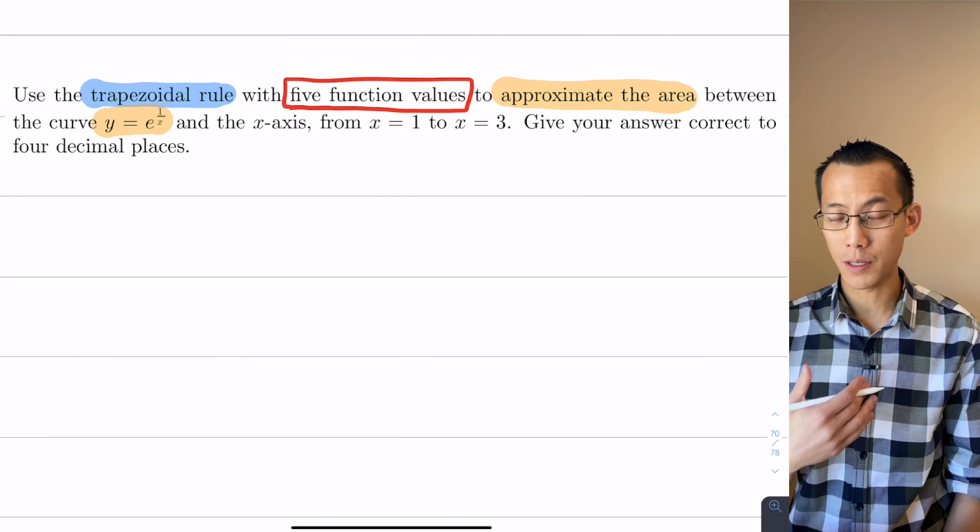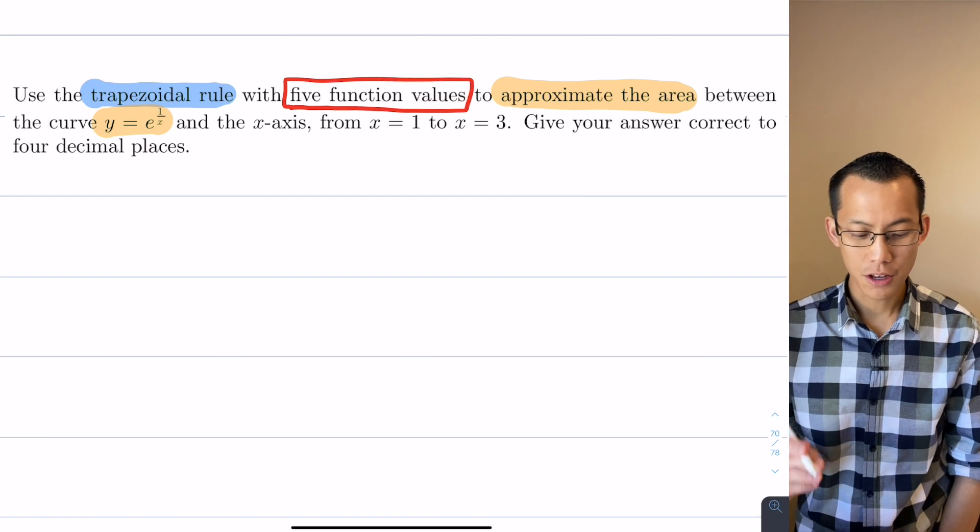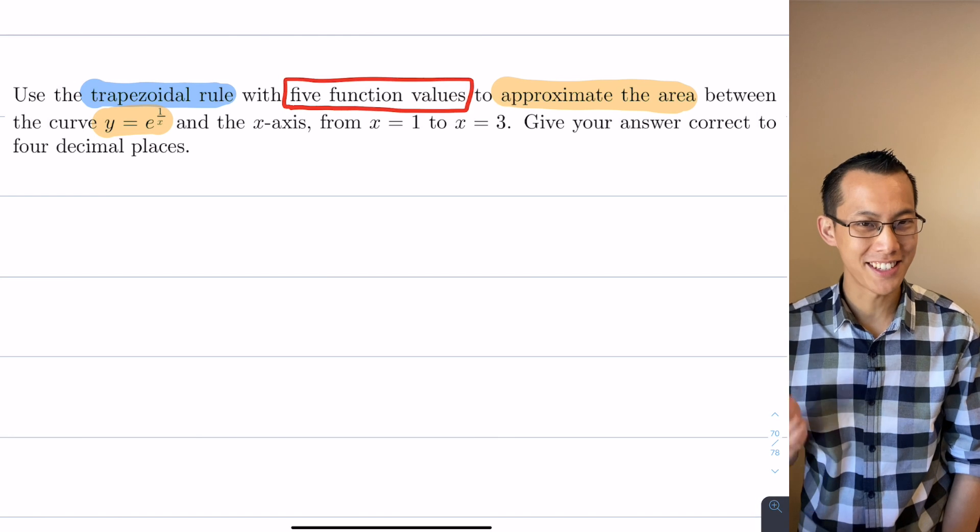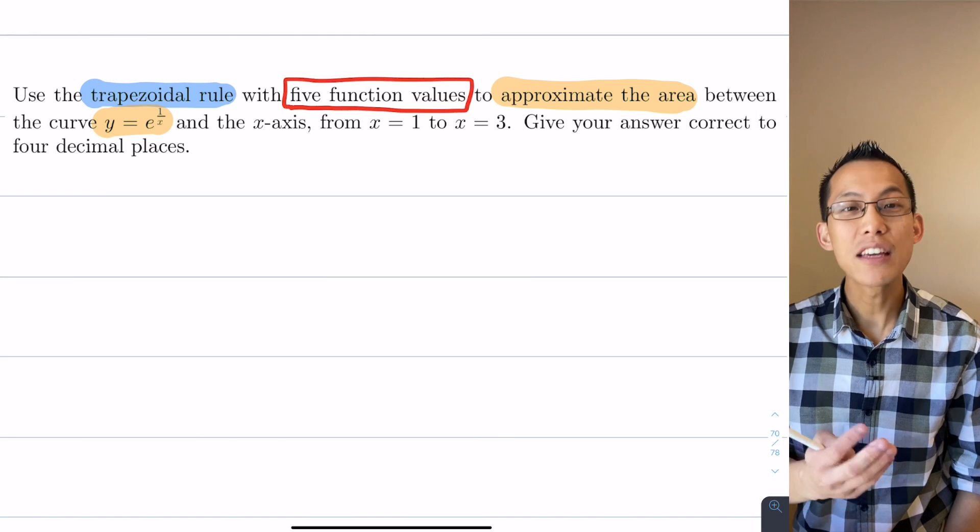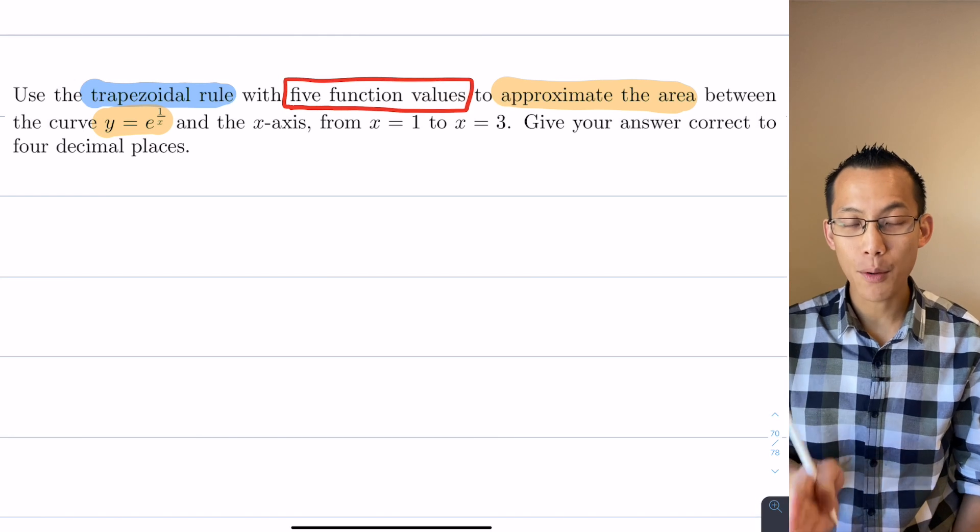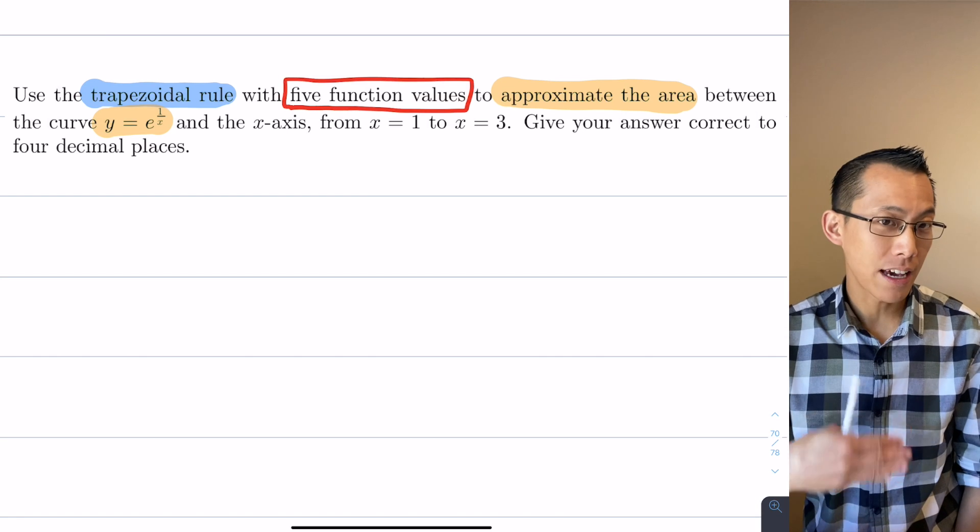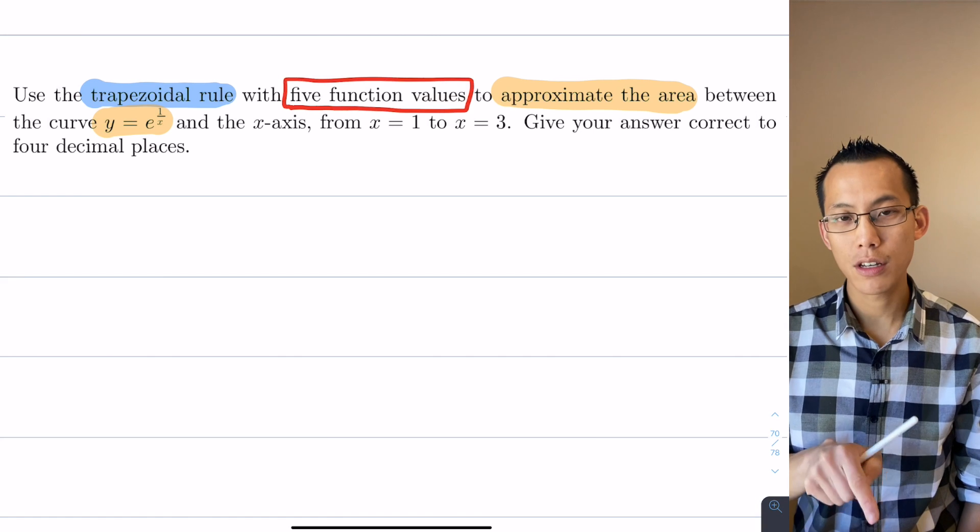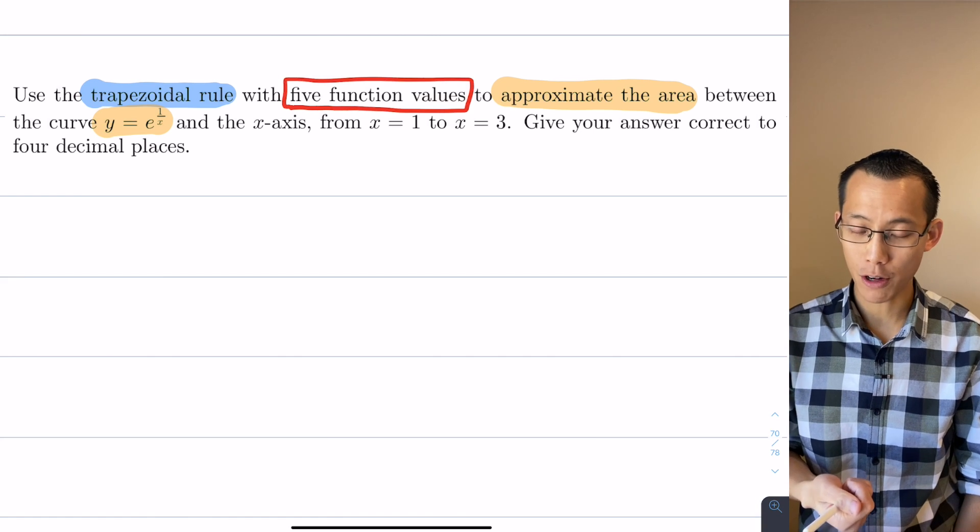Sometimes you want to get a specific amount of accuracy so you'll have to work that out yourself, but in 99.9% of the situations you're going to encounter they'll give you the number of function values they want.